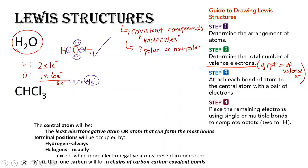Let's take a look at CHCl3. Remember the rules: put the least electronegative atom or the atom that can form the most bonds in the center. Carbon and hydrogen have the same electronegativity, but hydrogen can only make one bond. So hydrogens and halogens — anything in Group 7A — are always on the outside. They're never central atoms. That means carbon is going to be in the middle.